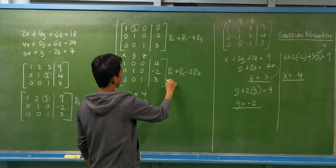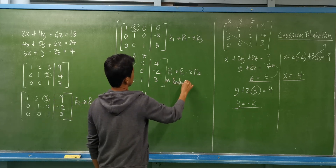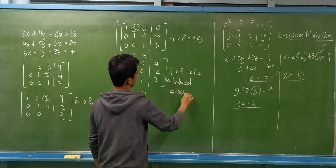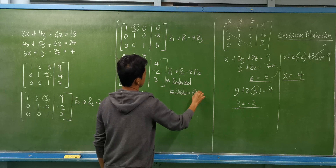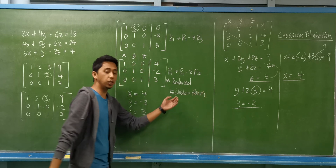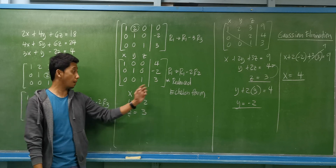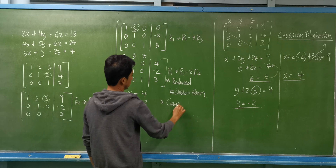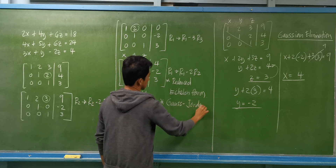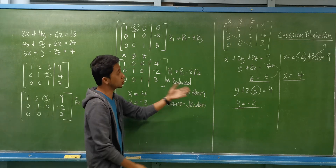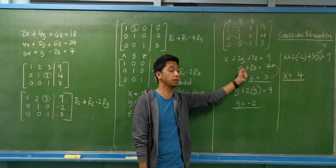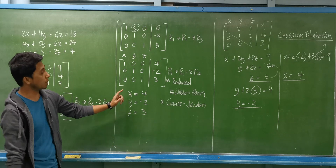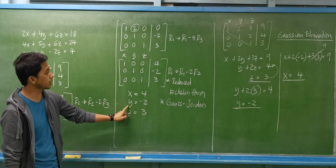This form is the reduced row echelon form. If we continue our solution up to the reduced echelon form, we are using the Gauss-Jordan method. If we stop at the row echelon form, that is Gaussian elimination. Either way, we arrive at the same answers: x=4, y=negative 2, and z=positive 3.